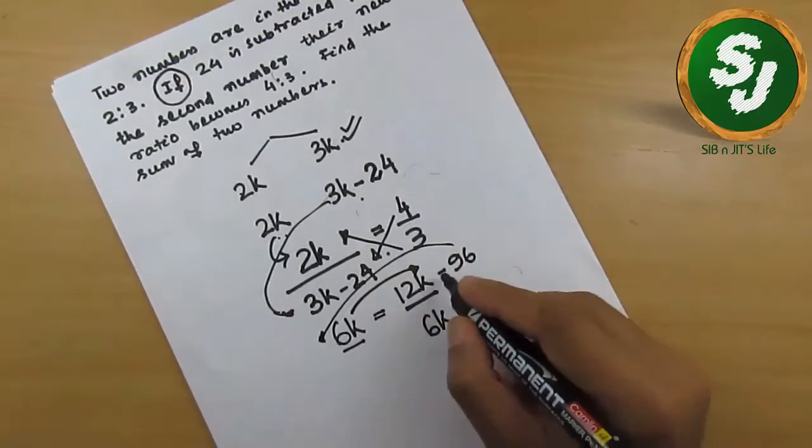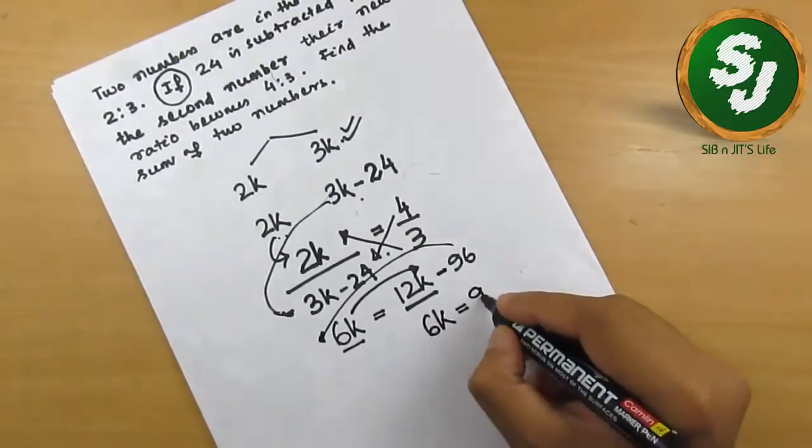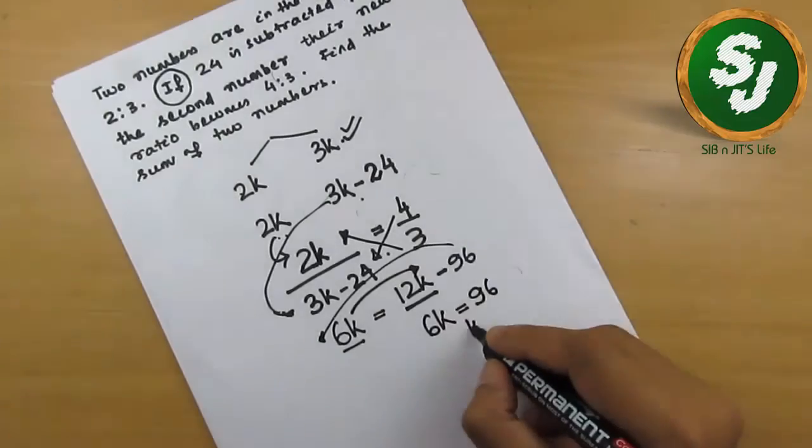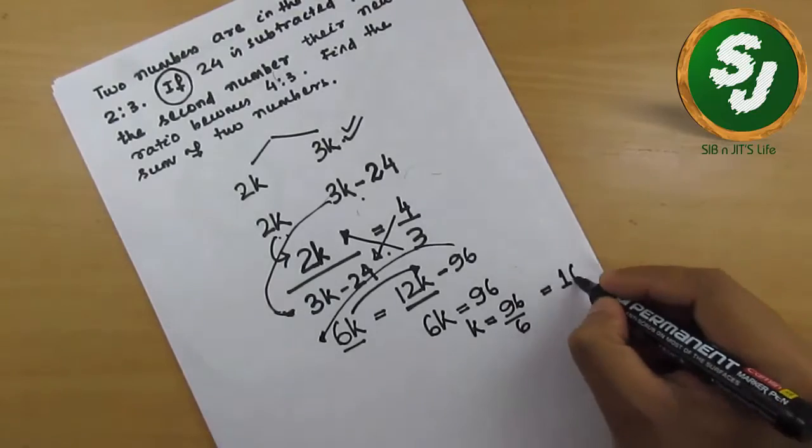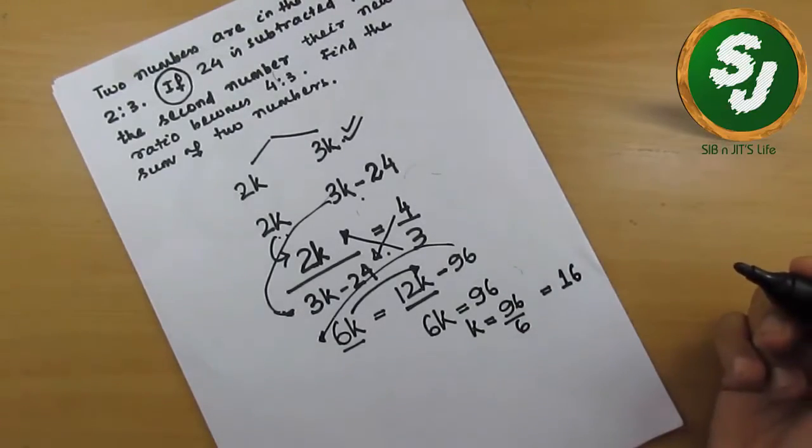and it becomes positive as it was minus 96. So 6k equals 96. k becomes 96 by 6, which will be nothing but 16. Now the question asks: find the sum of two numbers. What were